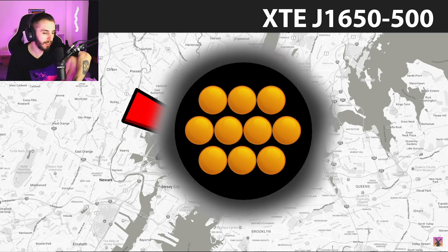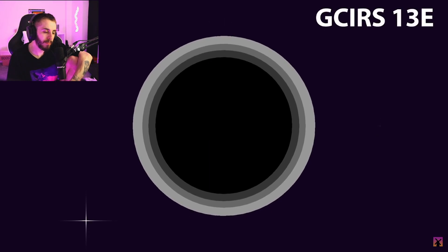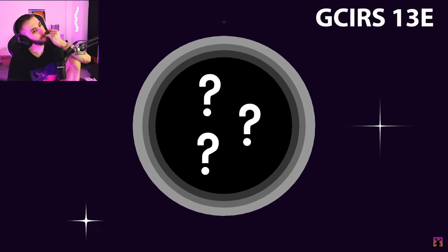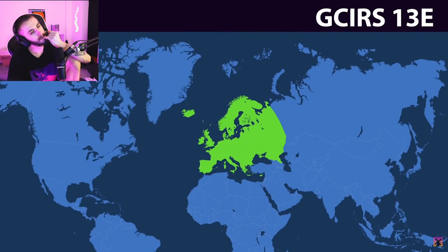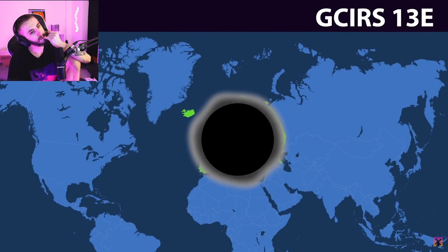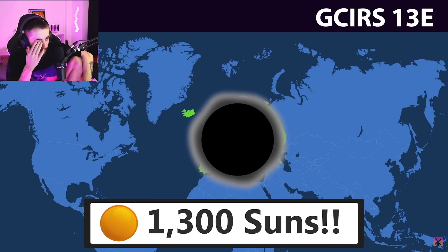There are even larger beasts lurking in the universe. Take another black hole named GC IRS 13E — there are questions surrounding its existence, but if it's real, its size is roughly the same as the continent of Europe, all while containing the mass of 1,300 suns inside of it.